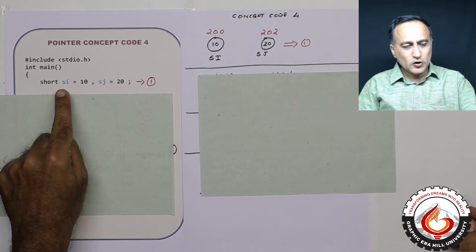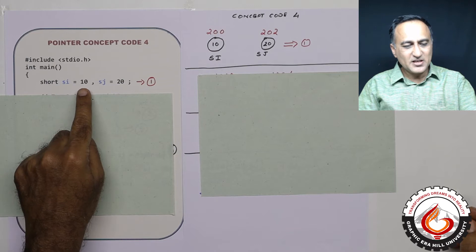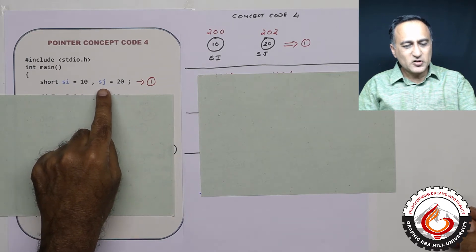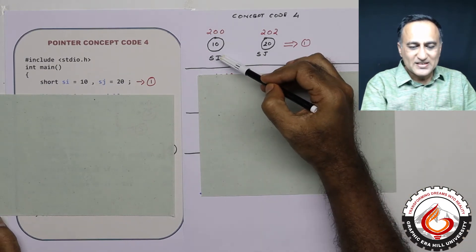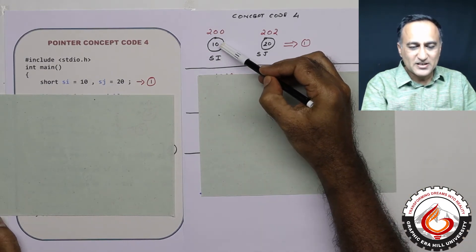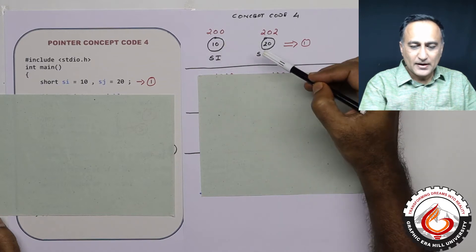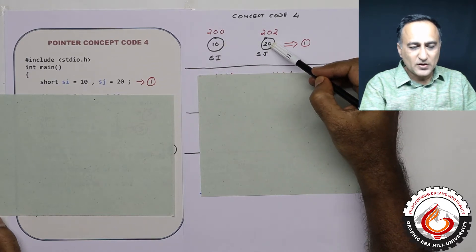I have declared a short integer si with the initial value 10, another short integer sj with the value 20. So at step number 1 what I have done is variable si is represented with the initial value 10, sj is represented with the value 20.